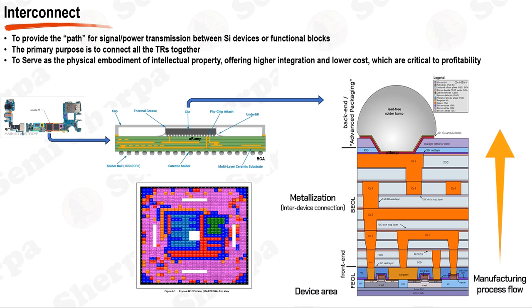Within the package, the AP chip, or die, is connected to the solder balls using flip chip bonding. This process involves micro bumps on the chip surface, aligned and connected to corresponding pads on the substrate within the package. These micro bumps are typically made of solder and provide the electrical connection between the chip and the BGA solder balls, allowing a high number of I/O connections critical for advanced AP chips. The substrate routes connections from micro bumps to solder balls and can also host passive components such as resistors and capacitors.